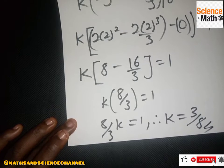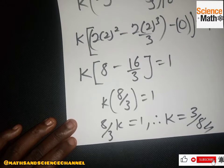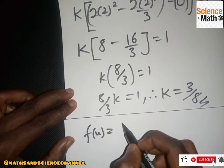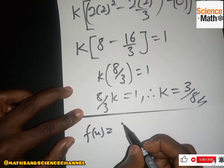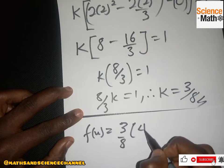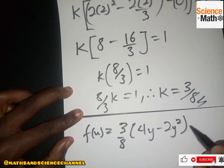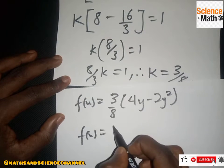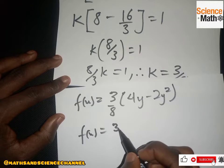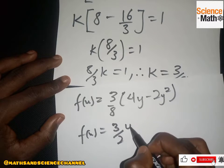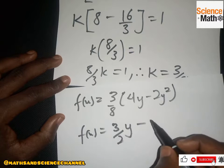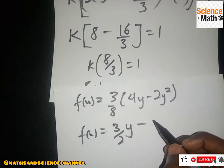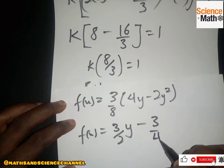So k equals 3/8. Our function f(y) becomes (3/8)(4y - 2y²). Simplifying, this gives (3/2)y - (3/4)y².